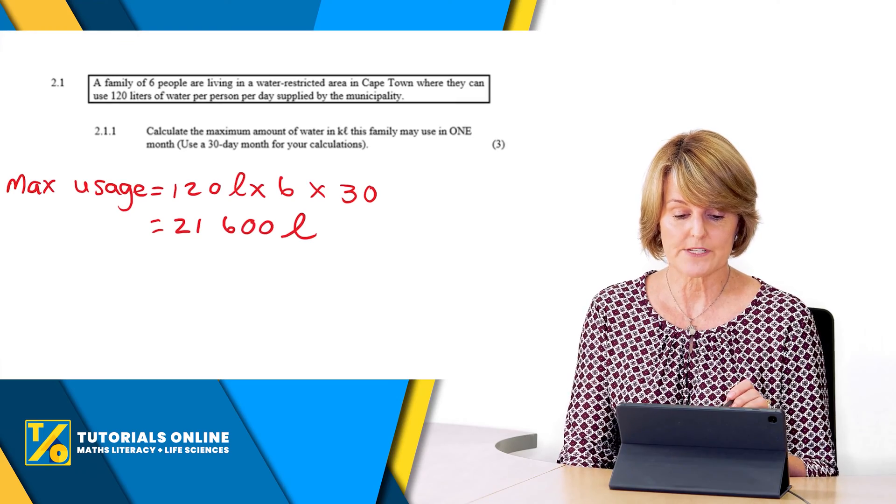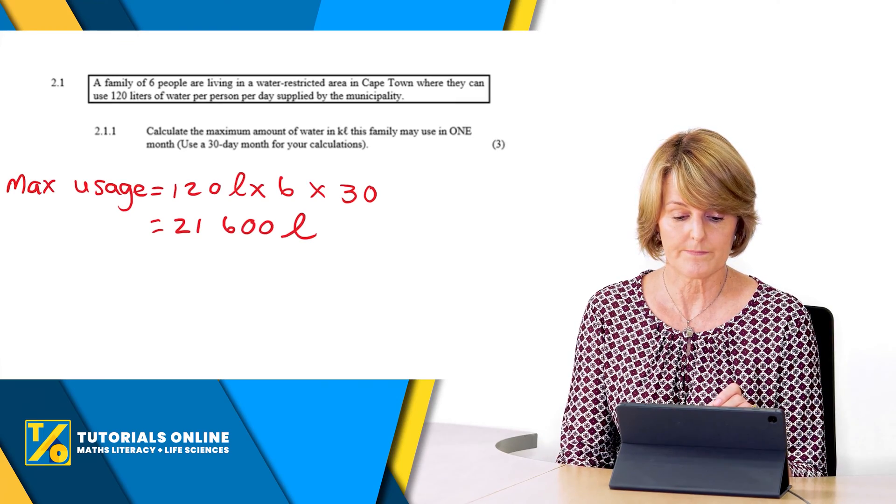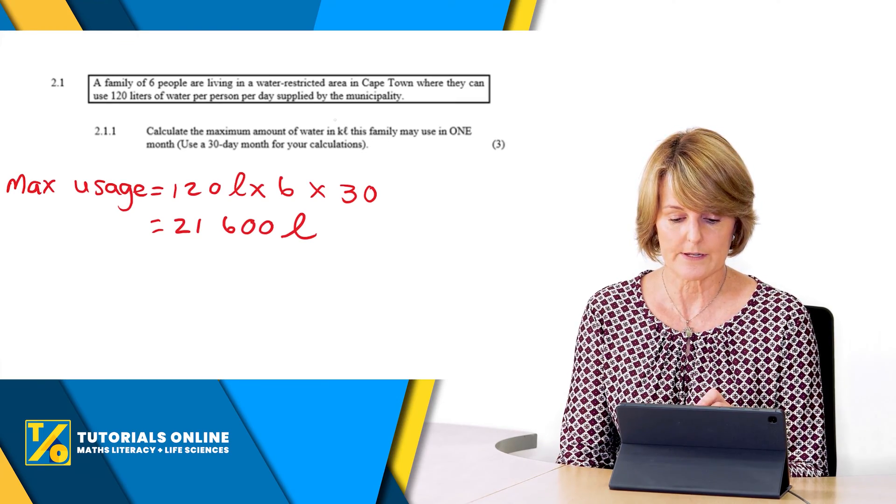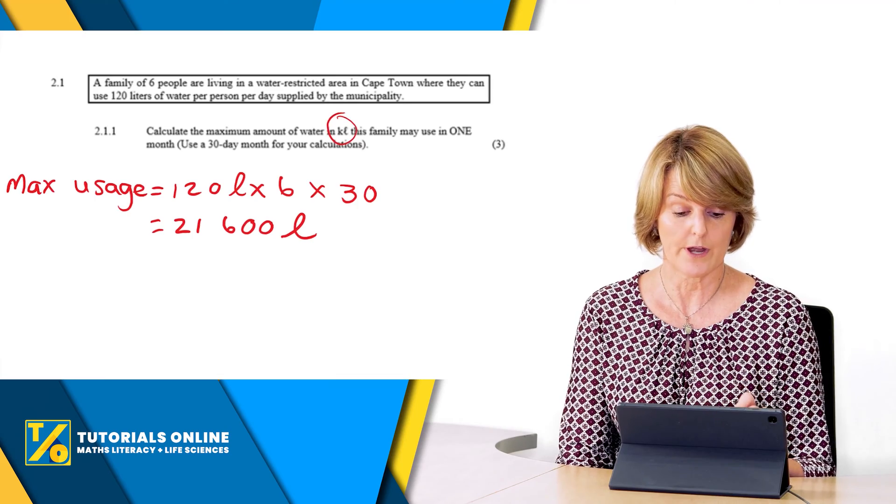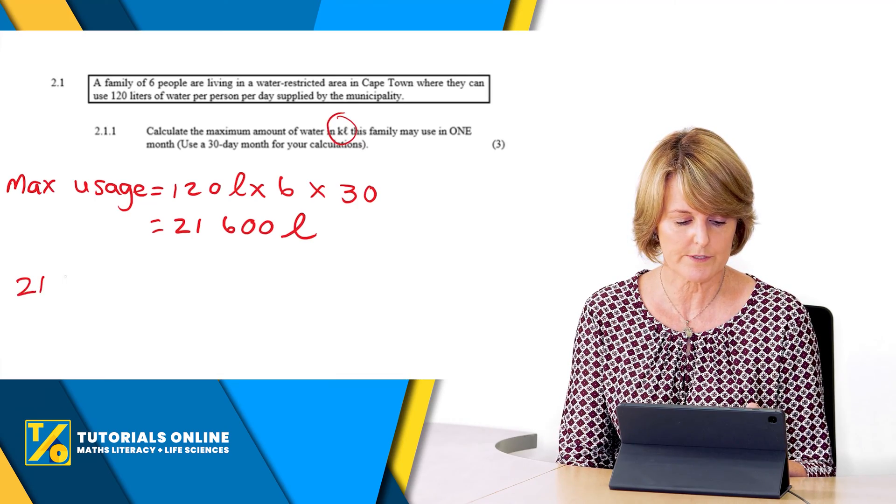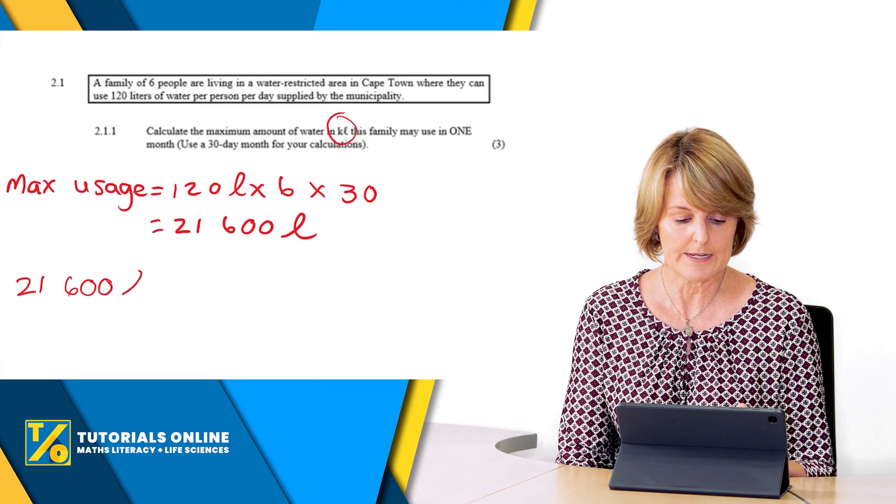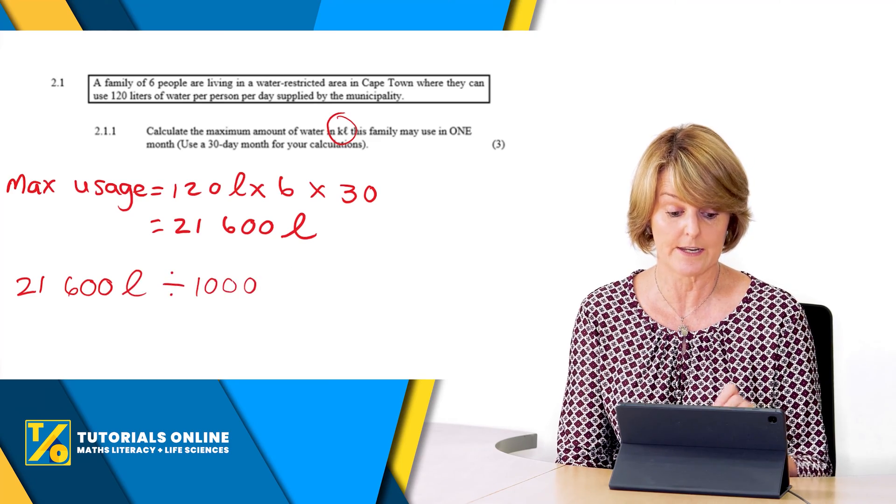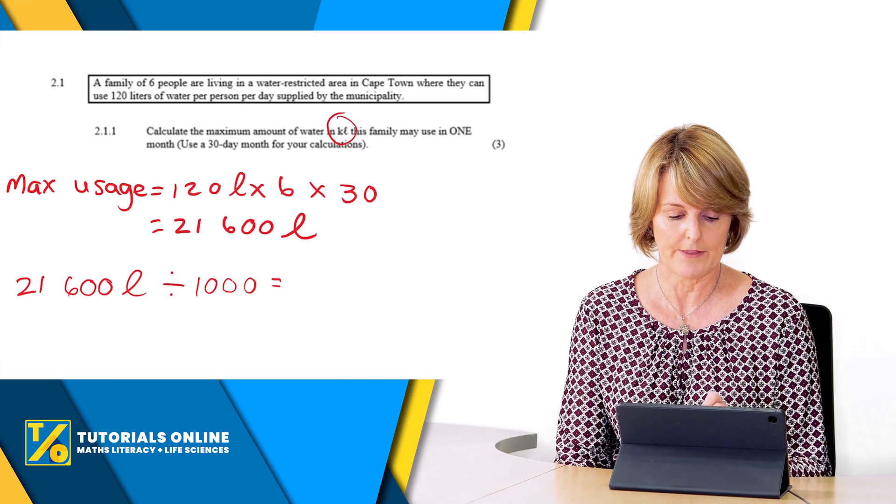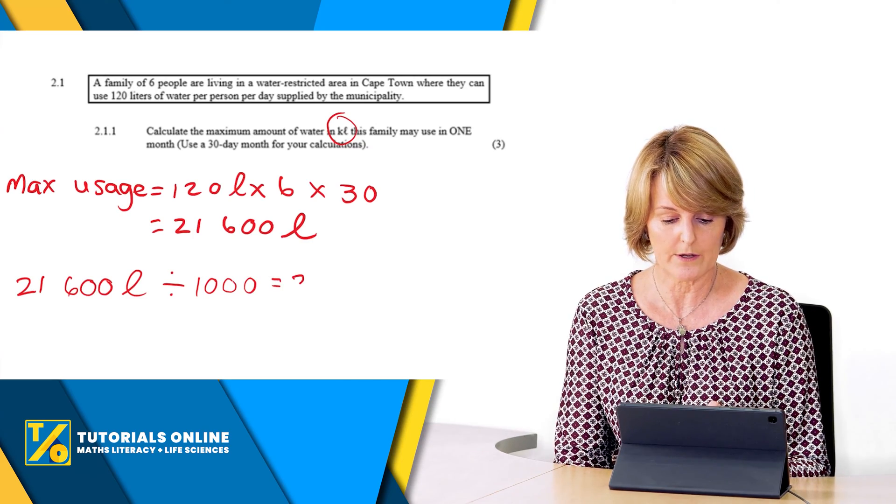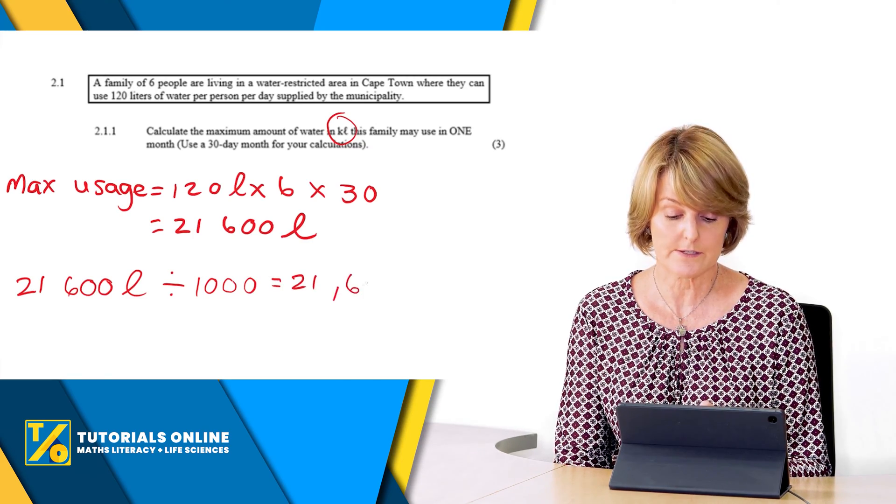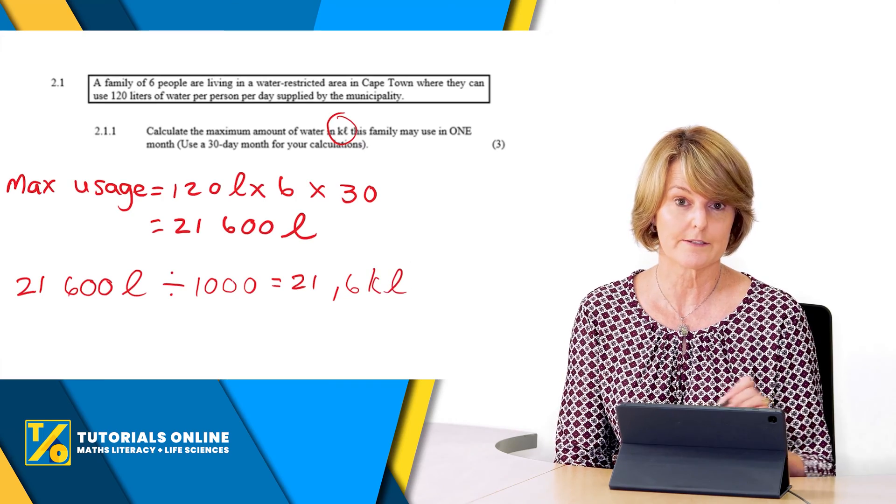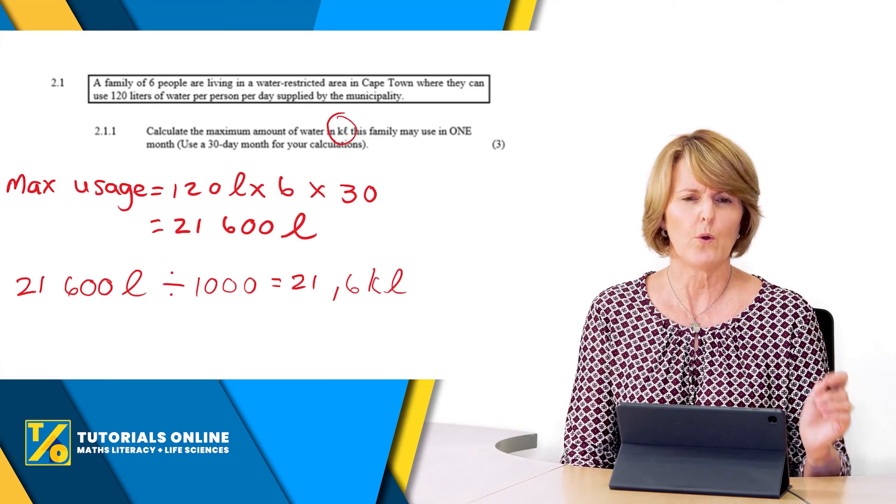So 120 times six times 30 gives us 21,600 litres. But let's have a look, it says that you must give the answer in kilolitres. So now we have to take the 21,600 litres and divide by a thousand because there are 1000 litres in one kilolitre, and then we get 21.6 kilolitres and that could be our answer.